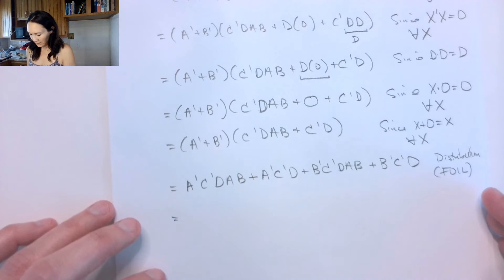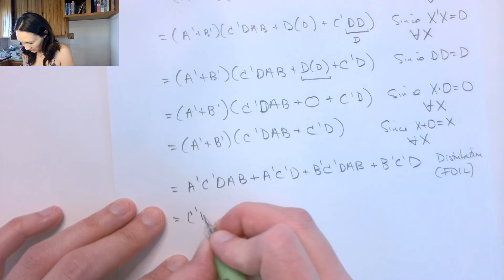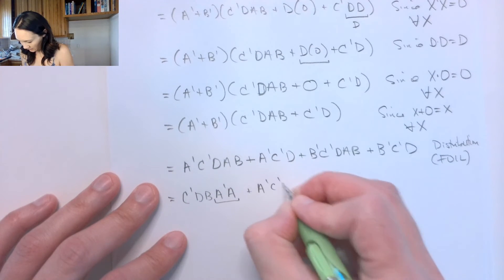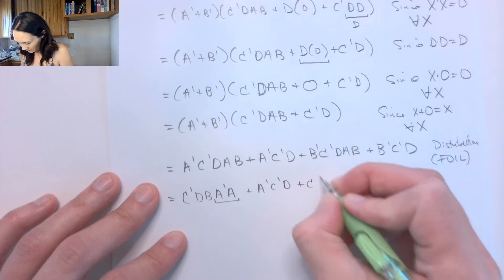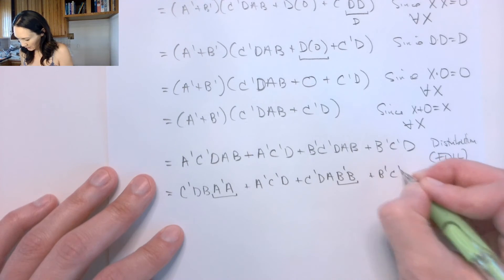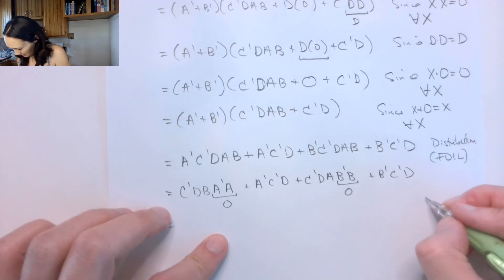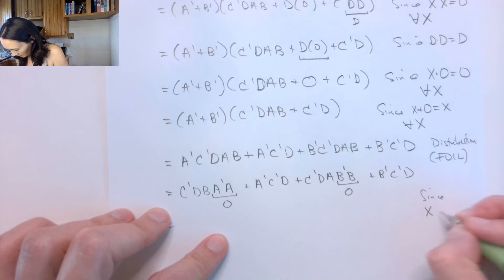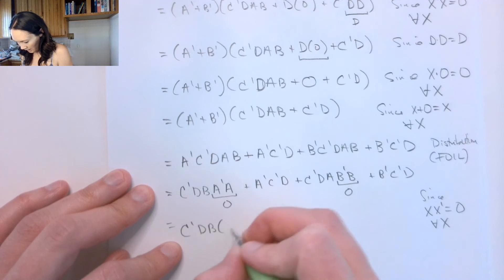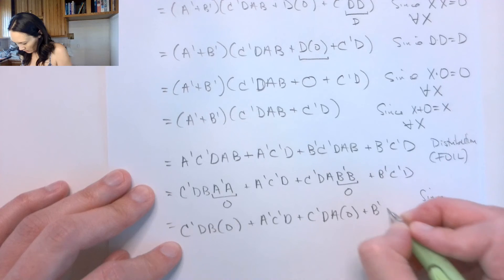Now I get to make some more simplifications. Writing some terms next to each other so you can recognize them — by commutativity of AND: I have C̄, D, B, times Ā·A — we can do something nice with that. Here I have Ā, C̄, D. Over here I have C̄, D, A times B̄·B — we can simplify that too. Then I have B̄, C̄, D. So Ā·A = 0 and B̄·B = 0 by the complement law.